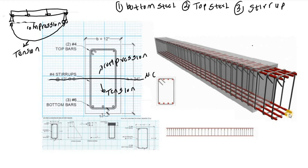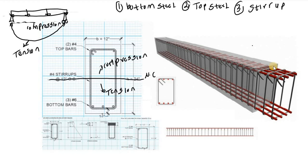For the top steel — also known as the anchor bar — concrete on the top side can easily resist compression forces because concrete is very strong in compression. But we still provide top bars on the top side of the beam. Why? Because we need to tie the bottom steel bar. We provide a top compression steel bar so that we can connect the bottom to the top using the stirrups.